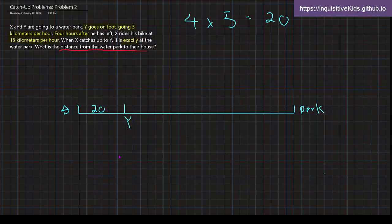That's where Y is. However, after he has left, X rides his bike at 15 kilometers per hour. So this is X. When he catches up to Y, it is exactly at the water park. What is the distance from their water park to their house?